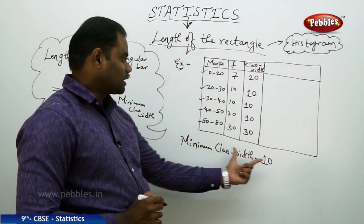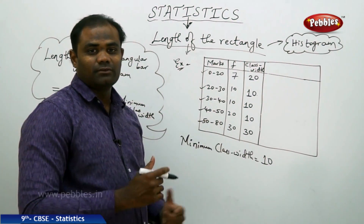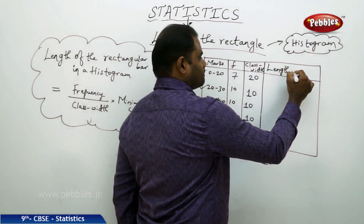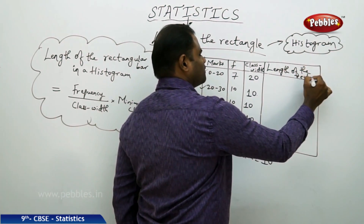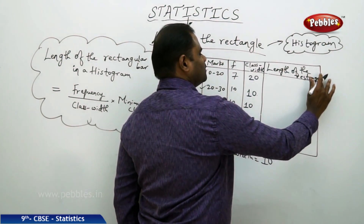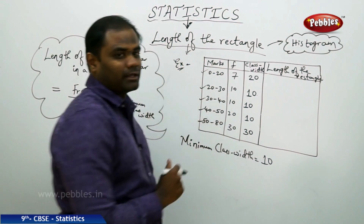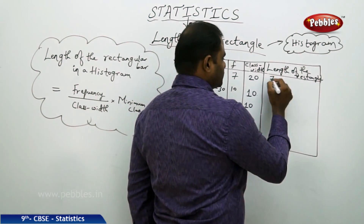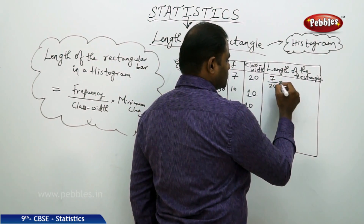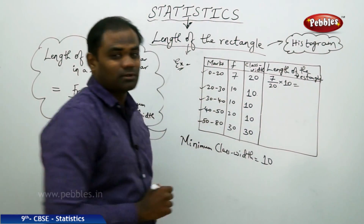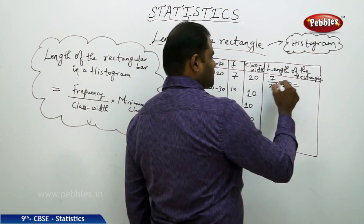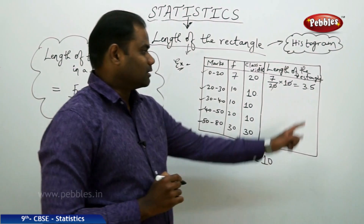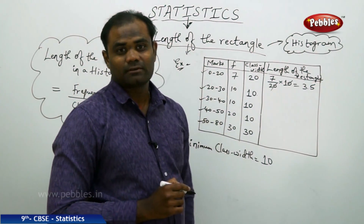Now we have the minimum class width, the class width, and the frequency. Therefore, the length of the rectangle is given by frequency by class width into minimum class width. For the first class interval, the calculation gives 3.5, so the length of the rectangle for the first class interval is 3.5.